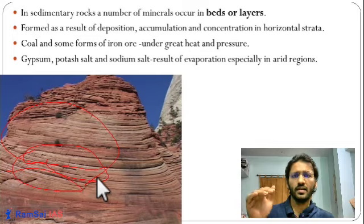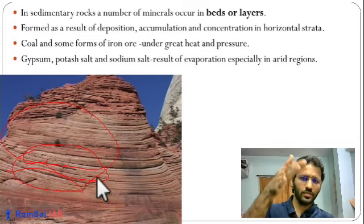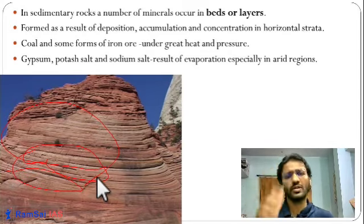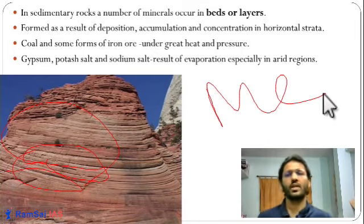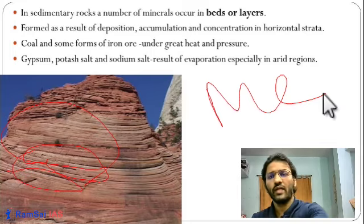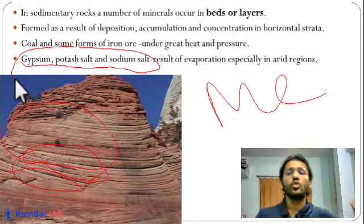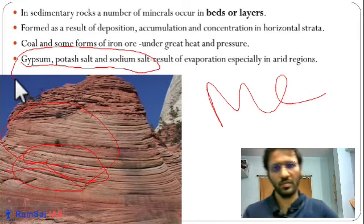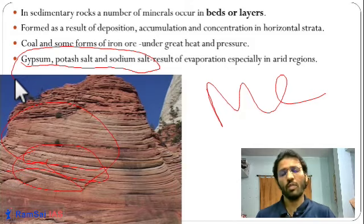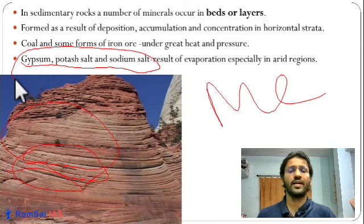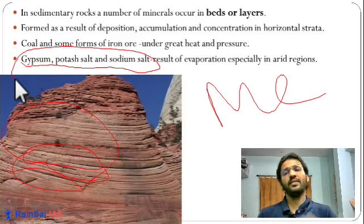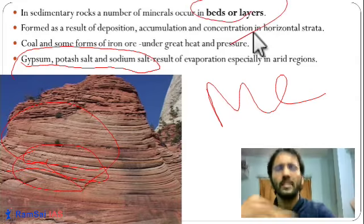Coal is also a result of heat and pressure and is sometimes classified as a metamorphic rock. Certain minerals like gypsum, potassium salts, and sodium salts are formed because of evaporation — due to very high heat, capillary effect, and drying off of water, these minerals come near the surface. In this way, minerals in sedimentary rocks are formed in the shape of beds and layers.